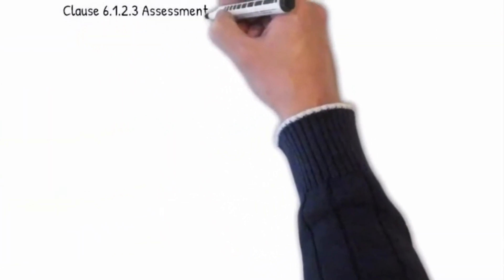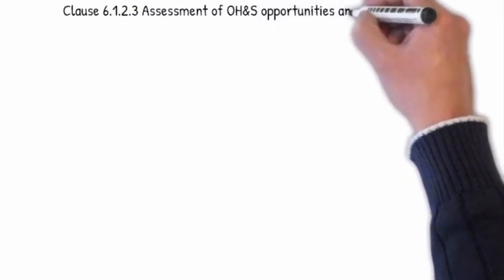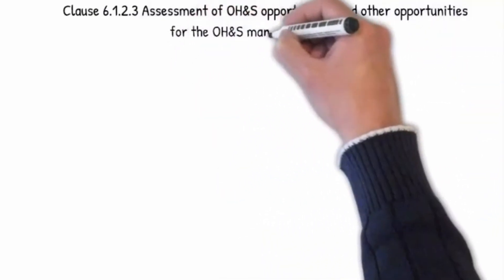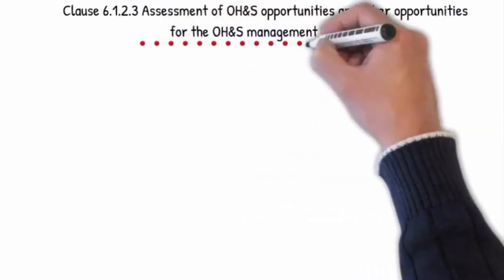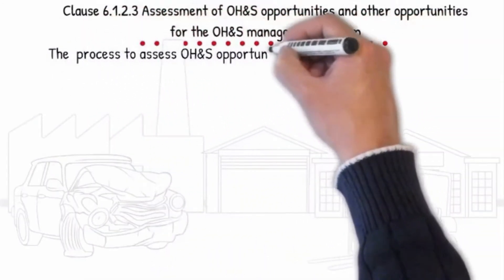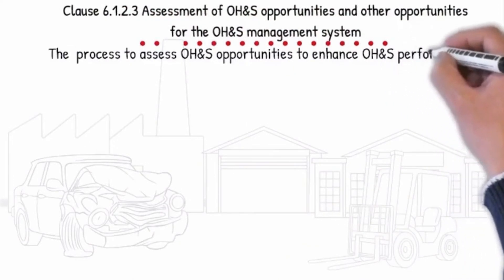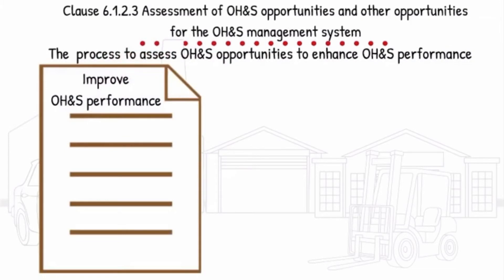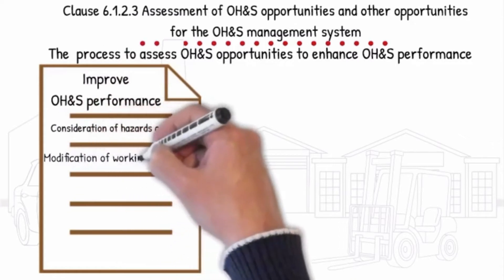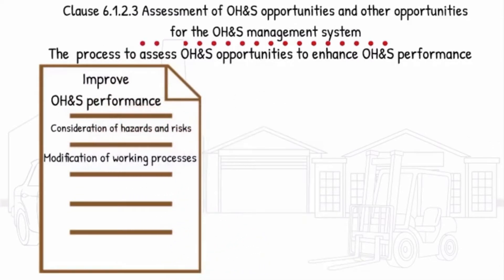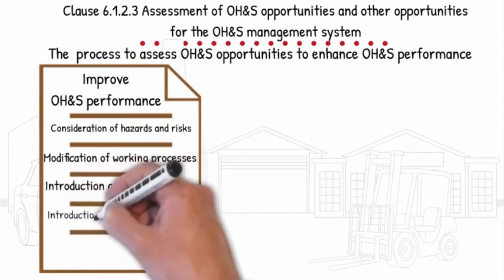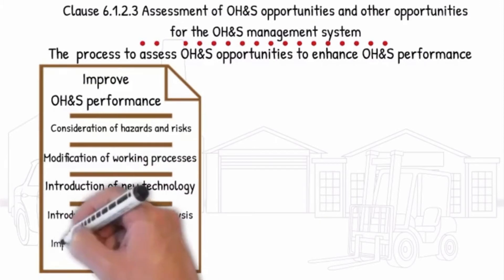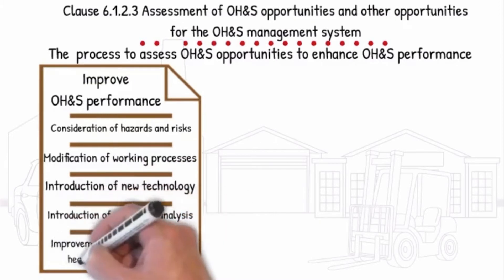Clause 6.1.2.3 Assessment of OH&S Opportunities and Other Opportunities for the OH&S Management System. The process to assess OH&S opportunities to enhance OH&S performance. Improving OH&S performance shall include consideration of hazards and risks, modification of working processes, introduction of new technology, introduction of job safety analysis, and improvement of the occupational health and safety culture.